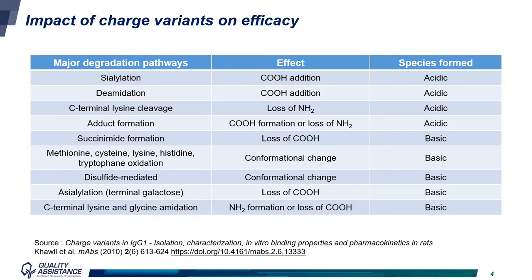For efficacy and safety reasons, it is mandatory to follow the charge variant profile. Here is a list of modifications. In the example of sialylation and deamidation, there is addition of a COOH group, which leads to the formation of an acidic form. Oxidation, on the other hand, leads to the formation of a basic form. Each of these modifications has an impact on the net charge of the monoclonal antibody and, as a consequence, on its PI.